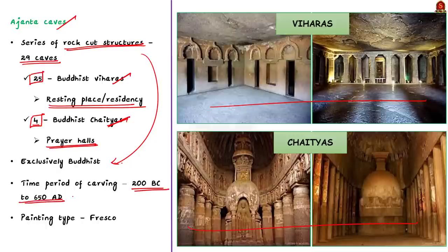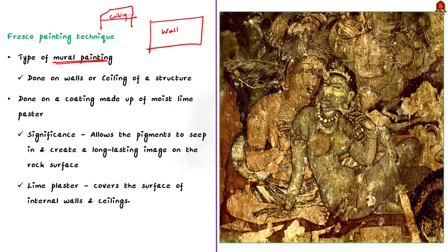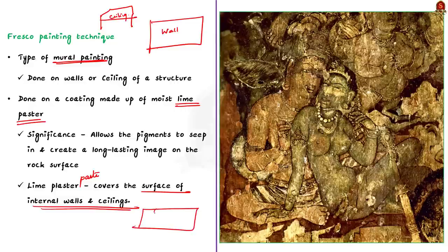The time period of development of the rock-cut structures in Ajanta ranges from 200 BC to 650 AD. The paintings inside the caves were done using fresco painting technique. Fresco is a type of mural painting — paintings done on the walls or ceiling of a structure. Fresco paintings are done on a coating made up of moist lime plaster, which allows pigments to seep in and create a long-lasting image on the rock surface.